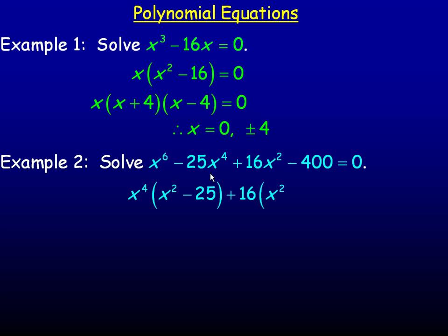If we factor an x to the fourth out of x to the sixth, we get x squared. Remember, subtract the exponents. If we factor an x to the fourth out of minus 25 x to the fourth, we get minus 25.